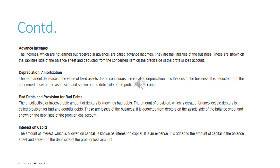Next are bad debts and provision for bad debts. Bad debts is an amount which we don't expect to receive in the future — for example, if we have given a loan to a person who is not financially stable and will not be able to repay. We consider that amount as a bad debt, and making a provision for it is known as provision for bad debts. It is deducted from the asset side and shown on the debit side of the P&L account. Next is interest on capital — it is a kind of interest received on capital, considered an expense, and it will be added to the capital account in the balance sheet.